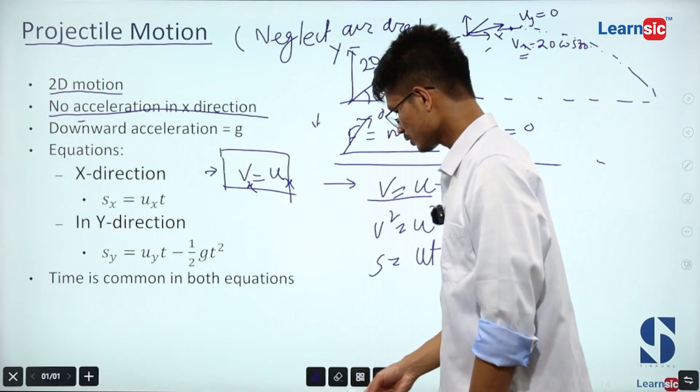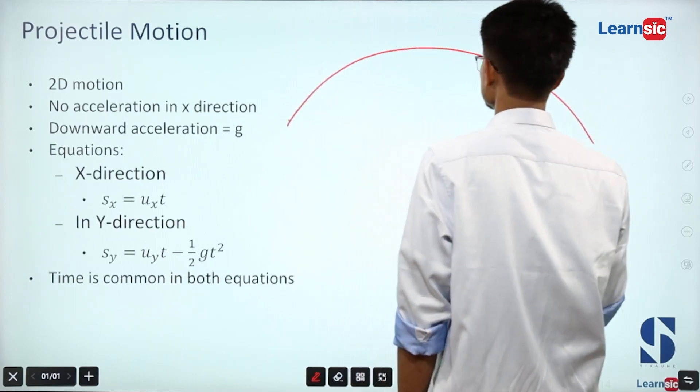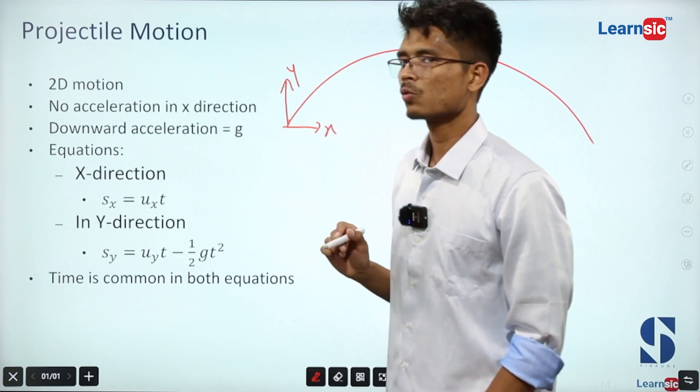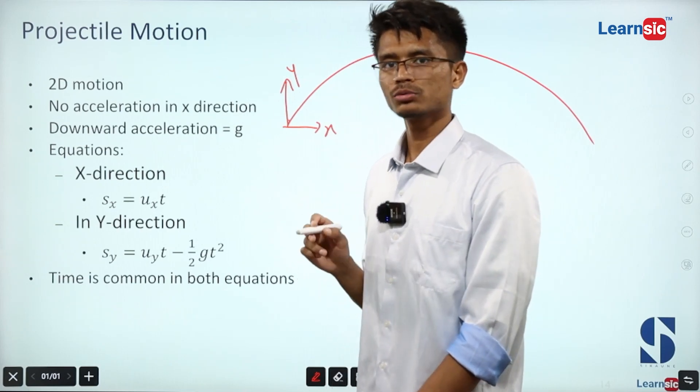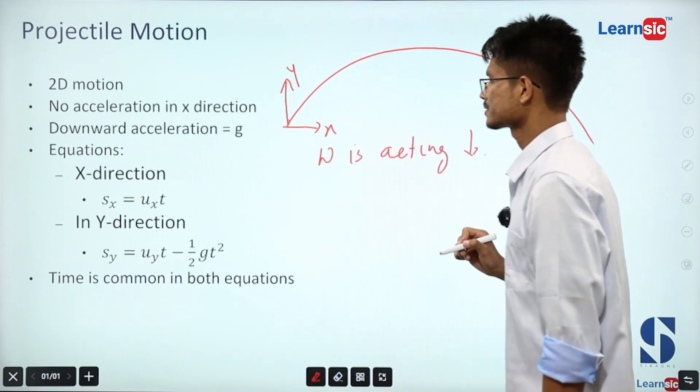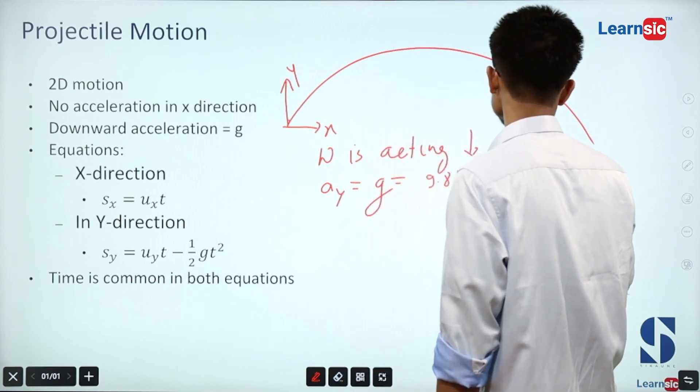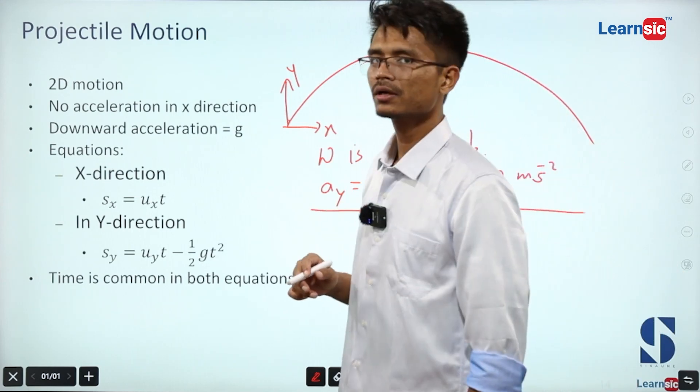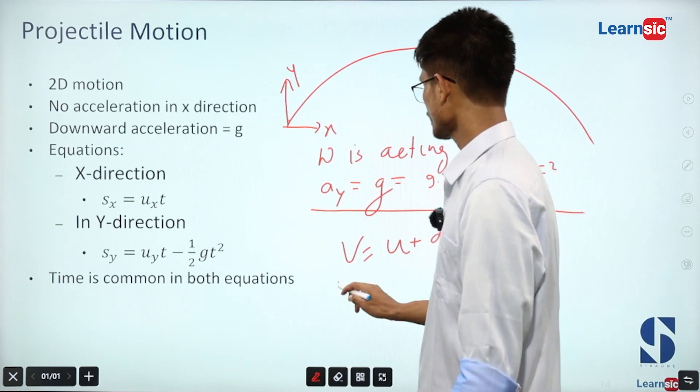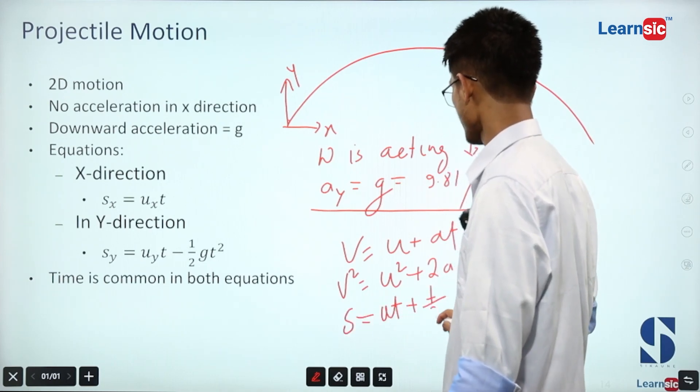In the y direction, there is always weight acting downwards, so acceleration is g. Because of this, in the y component all equations apply: v equals u plus at, v square equals u square plus 2as, and s equals ut plus half at square.